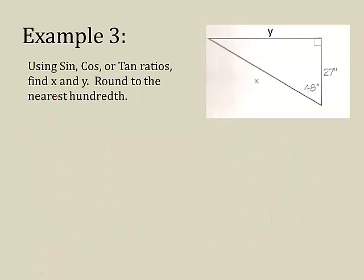One more example. Here's my angle theta. So let's think about what's opposite me. That's the y value. What's adjacent is the 27. And x is my hypotenuse.